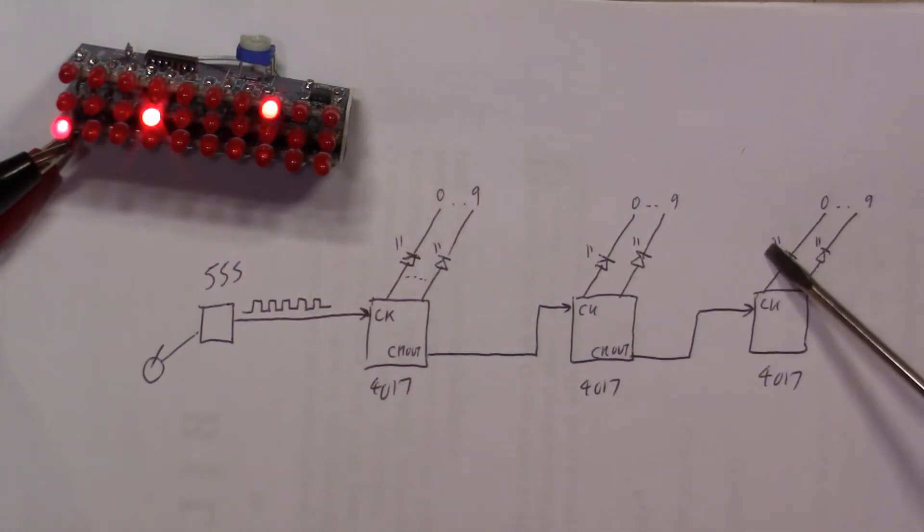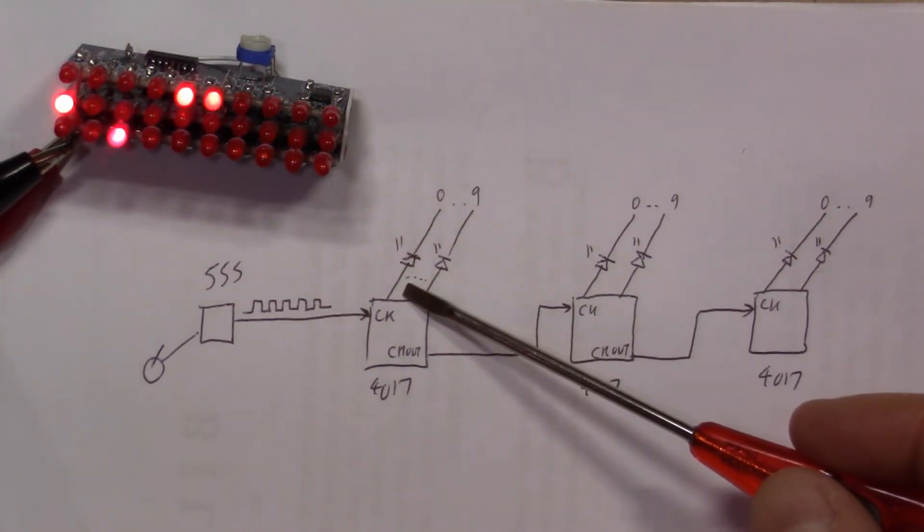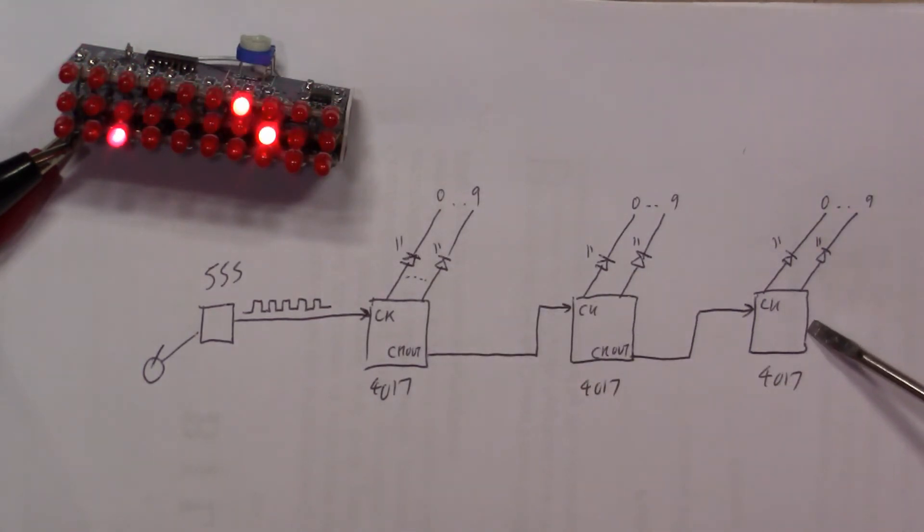And then you have the final row of 10 LEDs. So these LEDs only go from one digit to the next every time 10 of these have been seen, which means that a hundred of these transitions have had to happen. So we've got a ones, tens, hundreds counter and that's what you see on the display there.